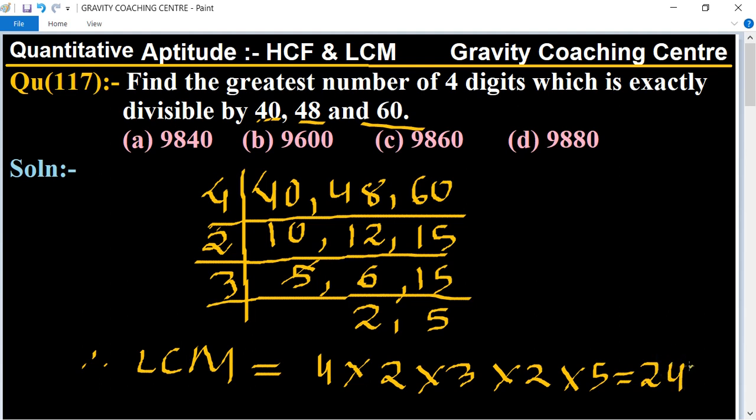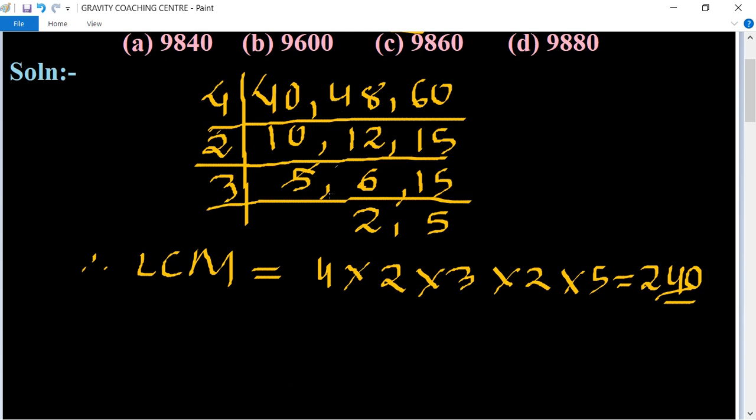So 240 is a number which is exactly divisible by 40, 48, and 60. But we have to find the greatest 4-digit number. We know that the greatest 4-digit number equals 9999.